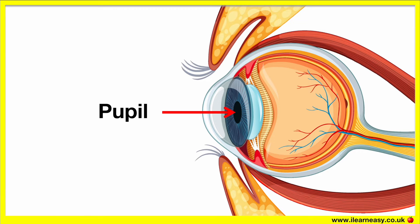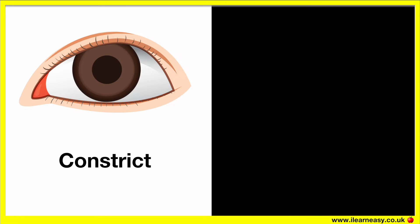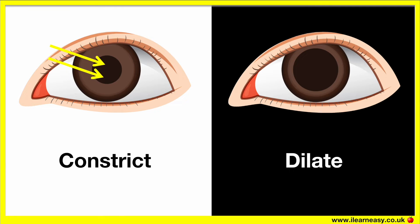In bright light, the circular muscles contract and the radial muscles relax, so the pupil appears smaller, therefore less light enters. In dim light, more light enters so we can see in darker settings.